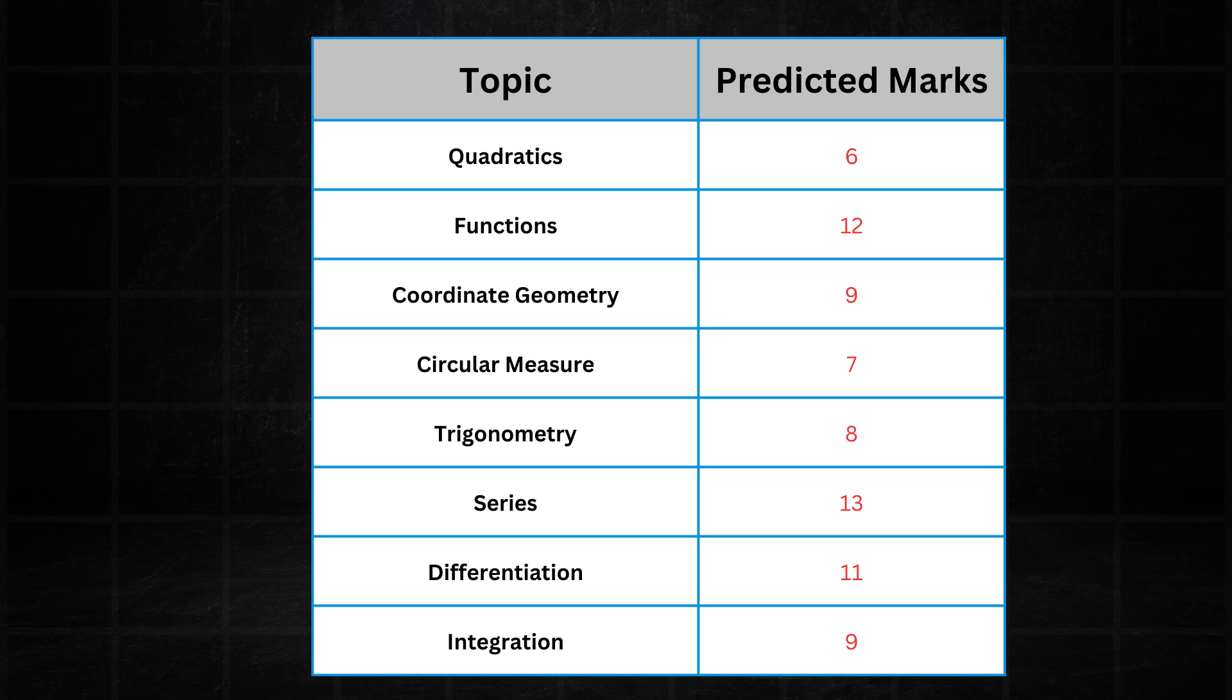So putting everything together this is the distribution of marks I expect in the May, June series for the pure one paper. Obviously I don't work for Cambridge so it's probably not going to be very accurate, so take it with a grain of salt.